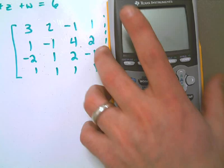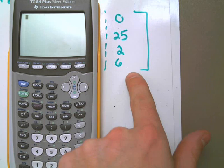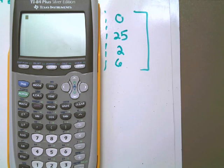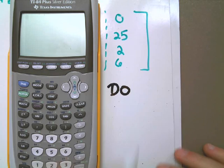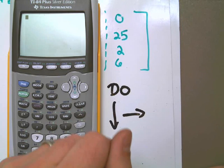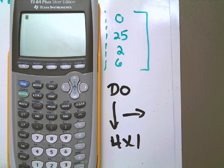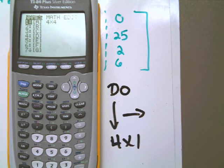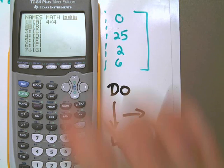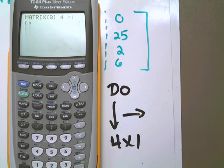Now, the next step is I need to edit, I need to put this in as its own matrix. And if you're trying to figure out, is it a one by four or a four by one, remember the memory device that we talked about in class, DO, right, do, down, then over. So it's four down, one over, it is a four by one matrix. I'm going to go into the matrix menu, I'm going to edit a second matrix, we're going to call it matrix B, okay, and that is a four by one matrix.